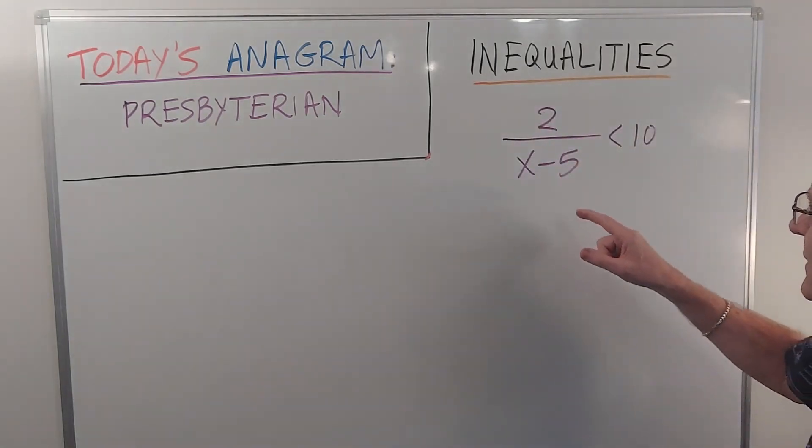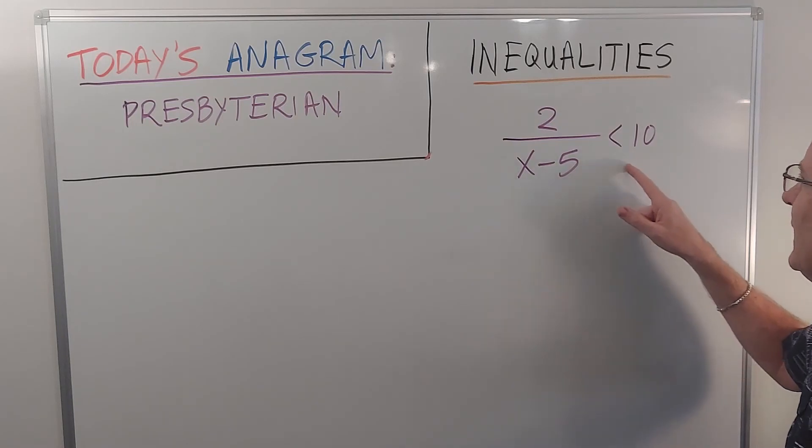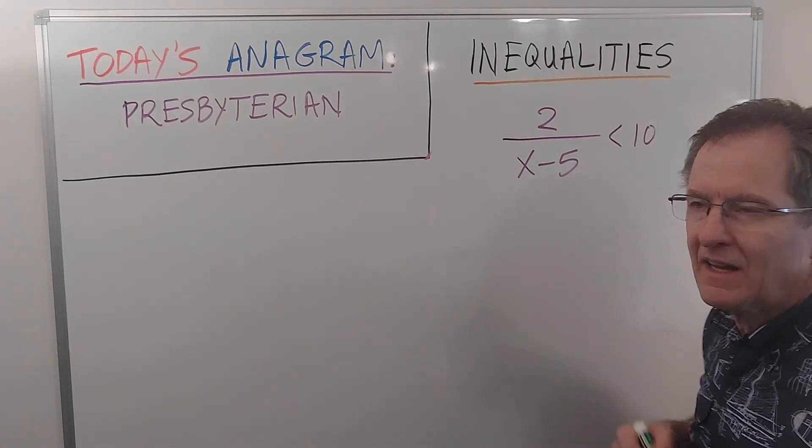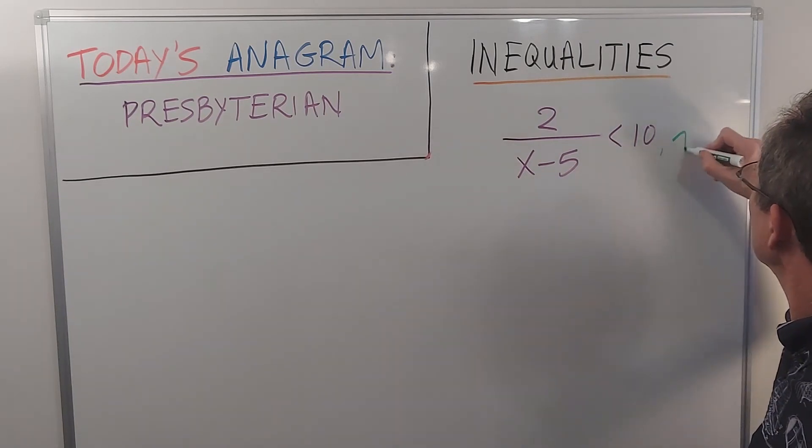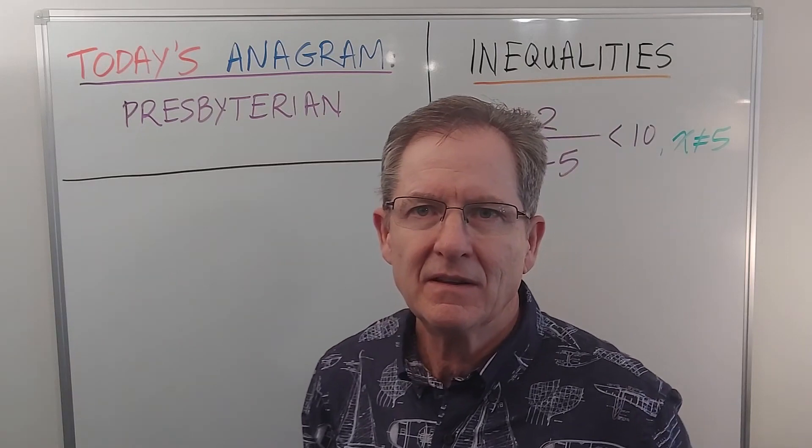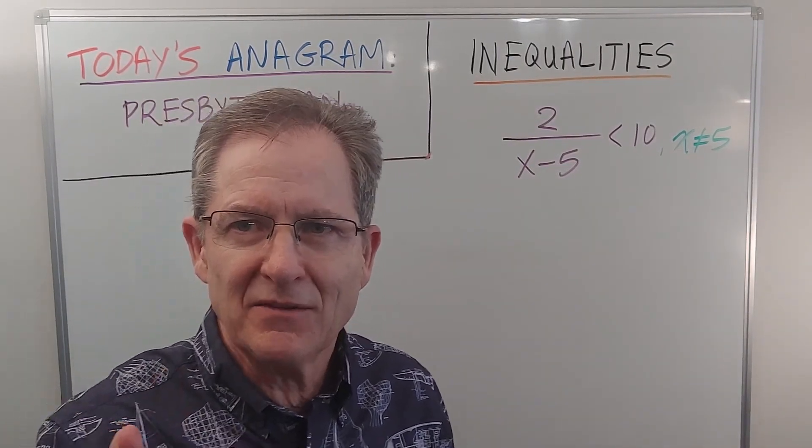Today's inequality is 2 over x minus 5, a rational expression less than 10. The first thing you should observe is that x cannot equal 5, because if x is equal to 5, you're dividing by 0, and you can't divide by 0.